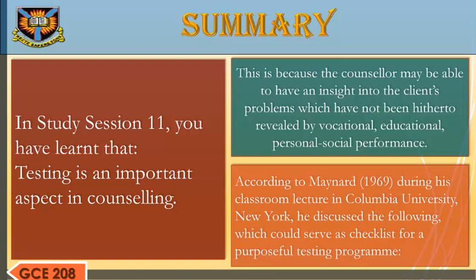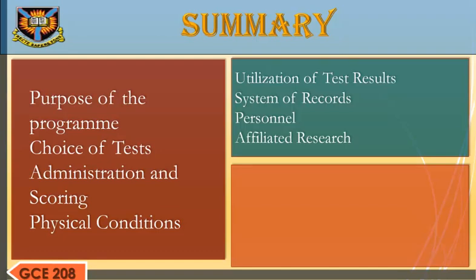Summary. In Study Session 11, you have learned that testing is an important aspect in counseling, as the counselor may be able to have insight into the client's problems which have not been told or reviewed by vocational, educational, personal, or social performance. According to Maynard, 1969, during his classroom lecture at Columbia University, New York, he discussed a checklist for a purposeful testing program covering: Purpose of the Program, Choice of Tests, Administration and Scoring, Physical Conditions, Utilization of Test Results, System of Records, Personnel, and Affiliated Research. We have come to the end of Study Session 11. Thanks for listening.